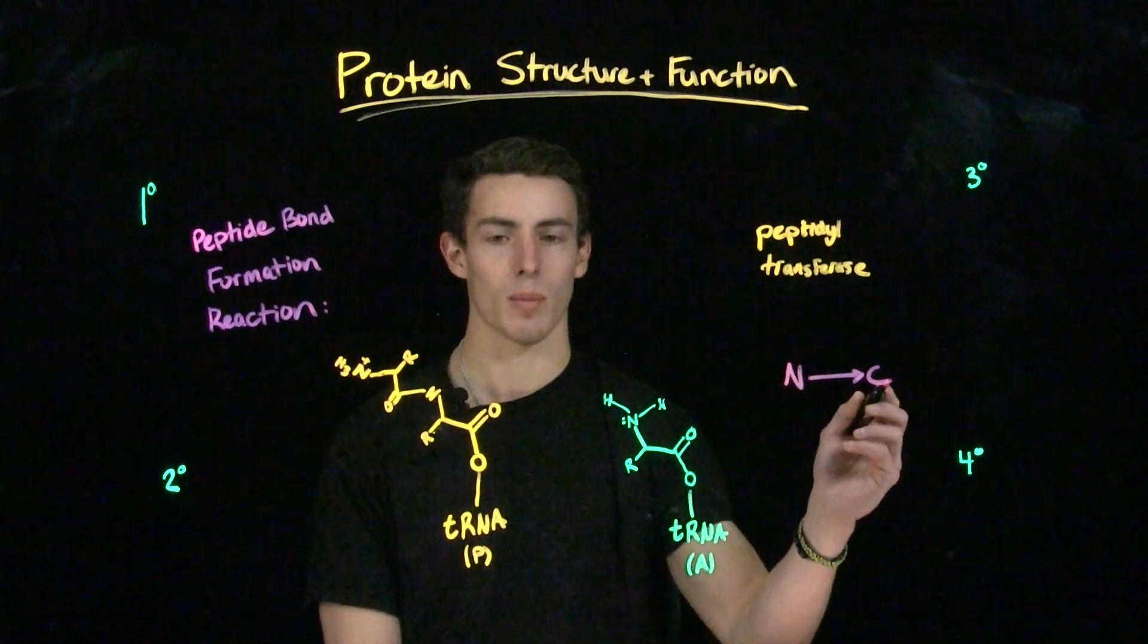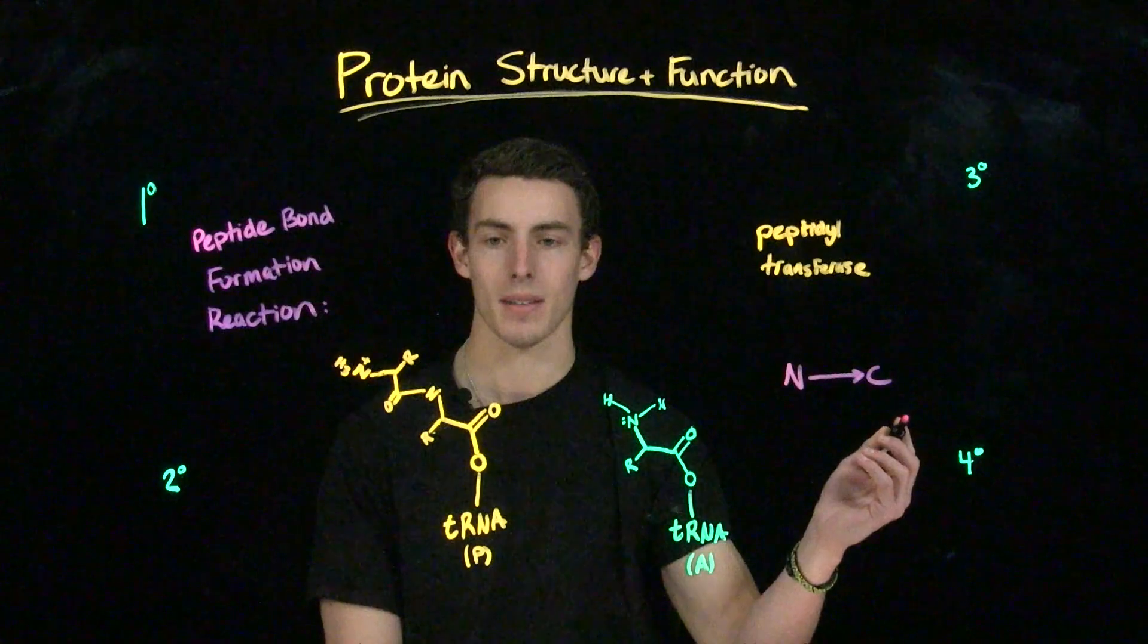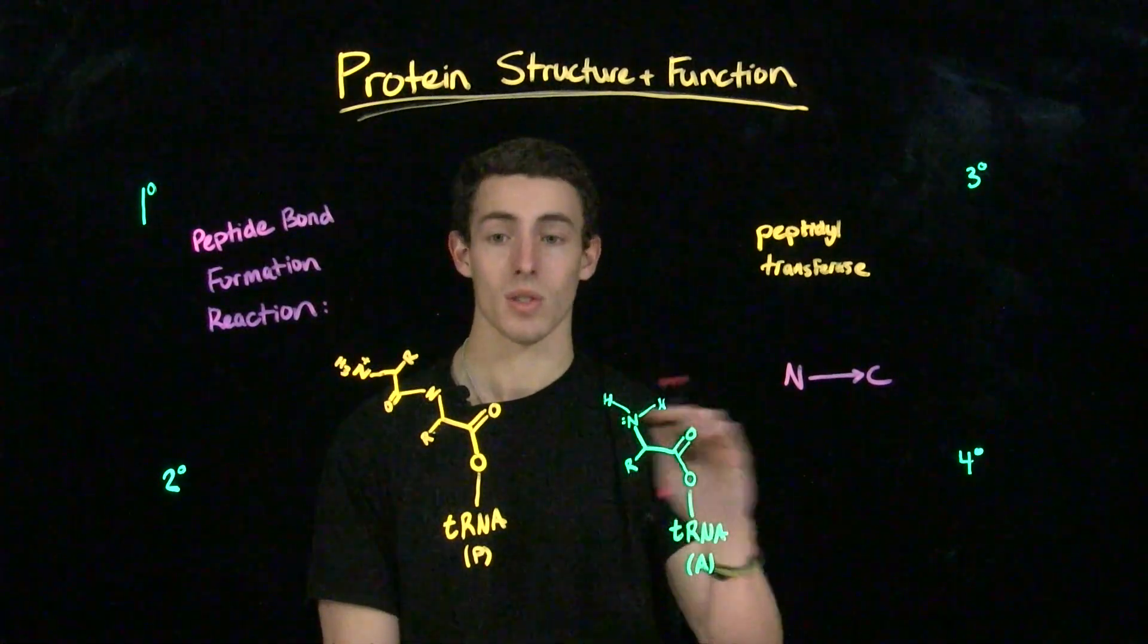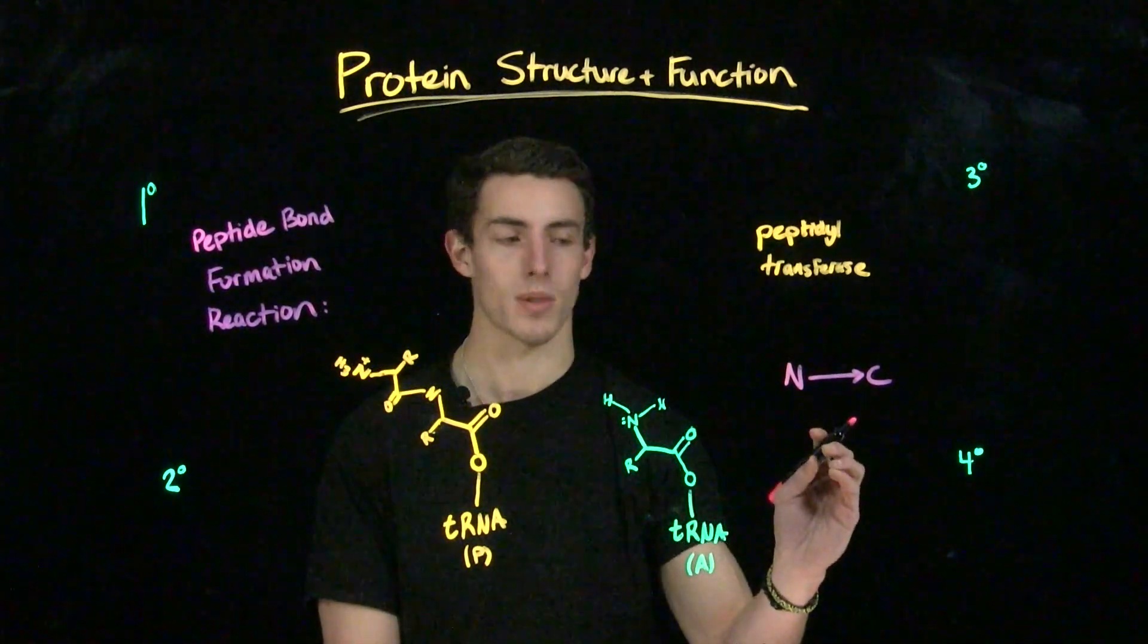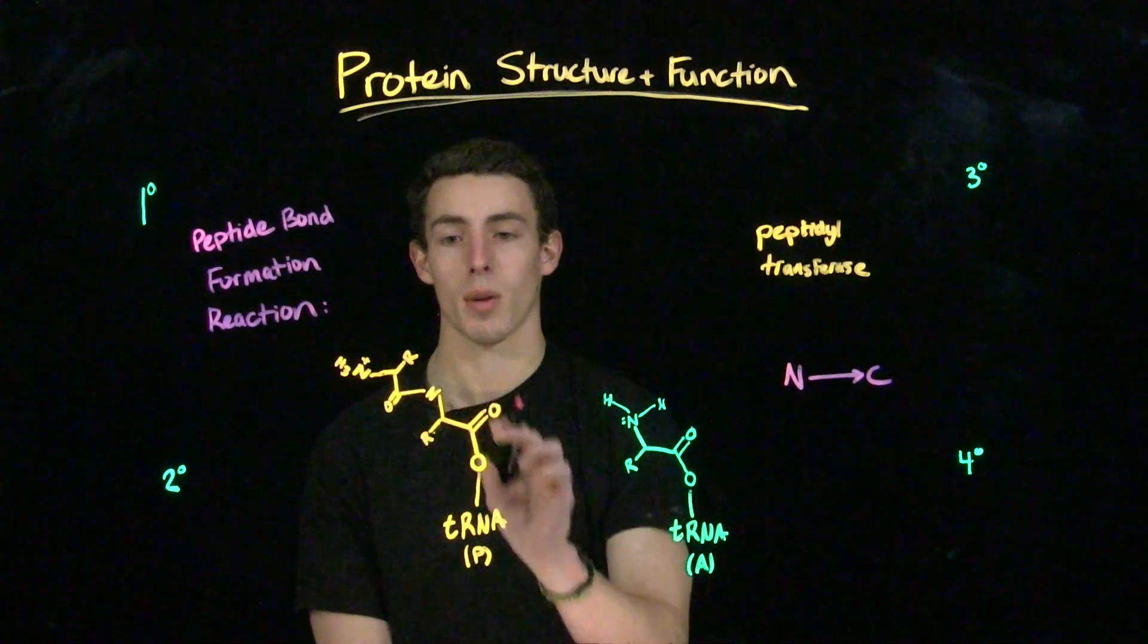They're going to have an N-terminus and a C-terminus, like a 5' and a 3' end. But know that unlike nucleic acids, there is not a 5' and a 3' end on proteins. Again, there's an amino and a carboxyl terminus.